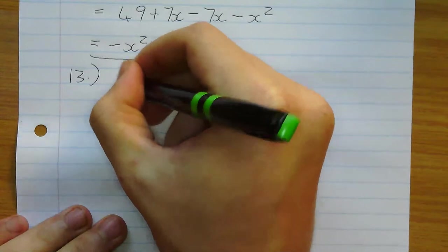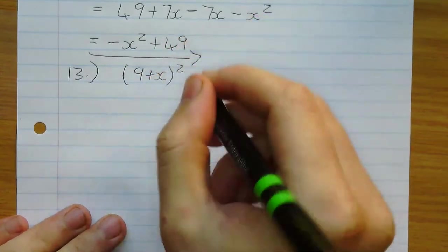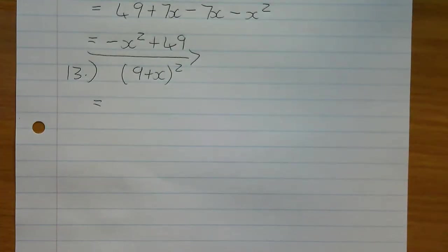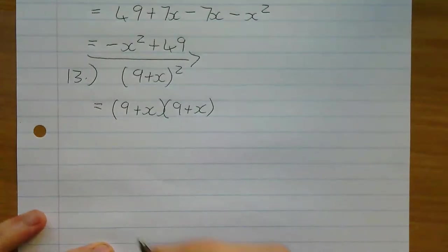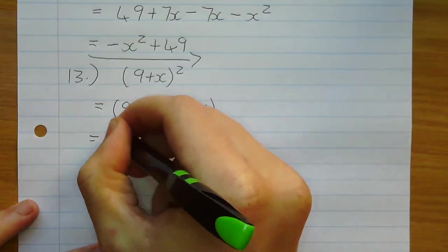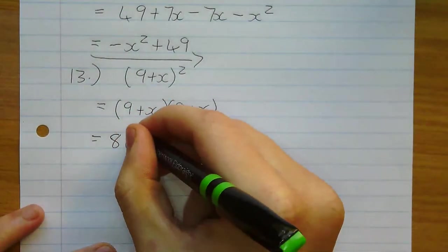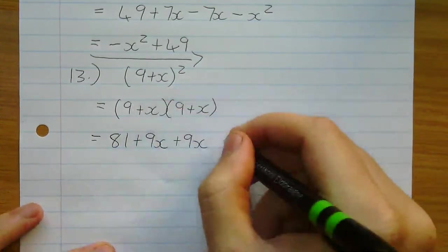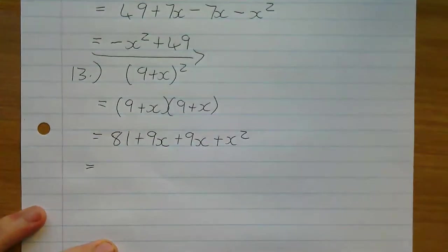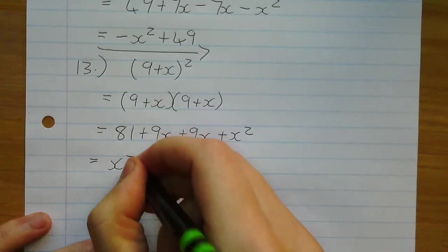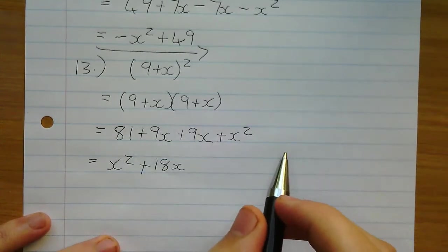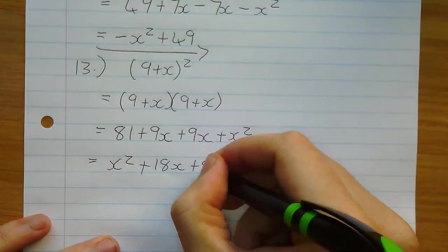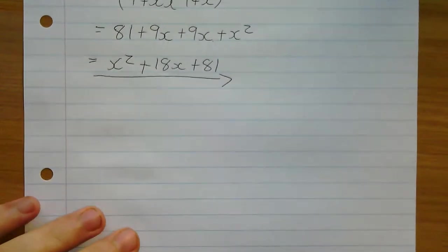Vraag 13: (9 + x) kwadraat. Kan ons die kwadraat inmal? Jy moet al so ingedril wees dat jy presies vir my kan sê: Nee meneer, jy sal nie kan nie - want daar is meer as 1 term in die hakie. So hierdie hakie staan 2 keer. 9 maal 9 is 81. 9 maal x is 9x. x maal 9 is nog steeds 9x. x maal x is x kwadraat. Gelyksoortige terme en dalende volgorde: x kwadraat, wat is 9 plus 9? Dit is 18x. Wat bly oor is die 81. Antwoord: x kwadraat plus 18x plus 81.